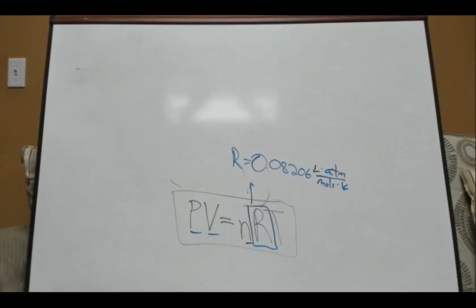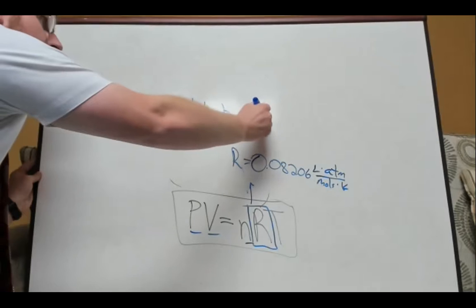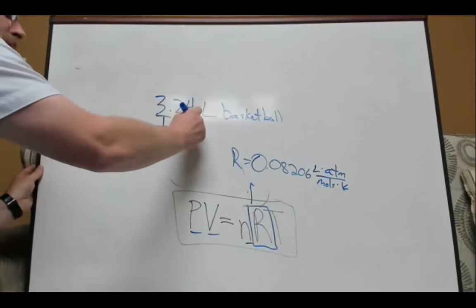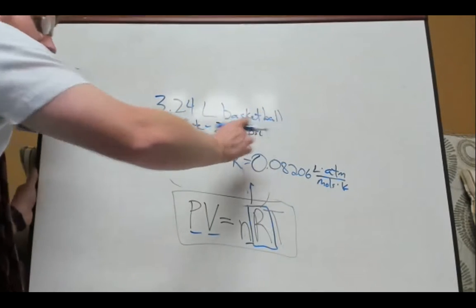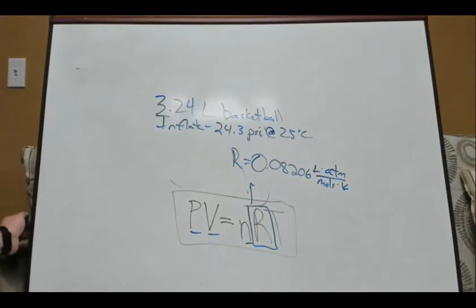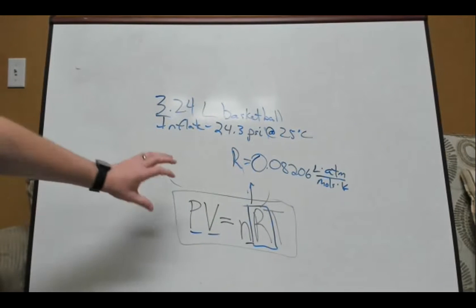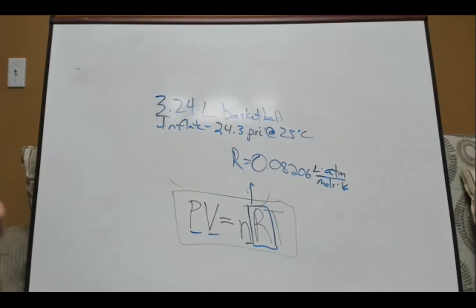I want you to try to solve this practice problem. You have a 3.24-liter basketball, and you inflate it to a pressure of 24.3 PSI. The outside temperature is 25 degrees Celsius. How many moles of gas are needed to inflate a basketball of this size to this pressure at this temperature? Walk through filling things out in the correct units, then use the ideal gas law to solve for what we need.